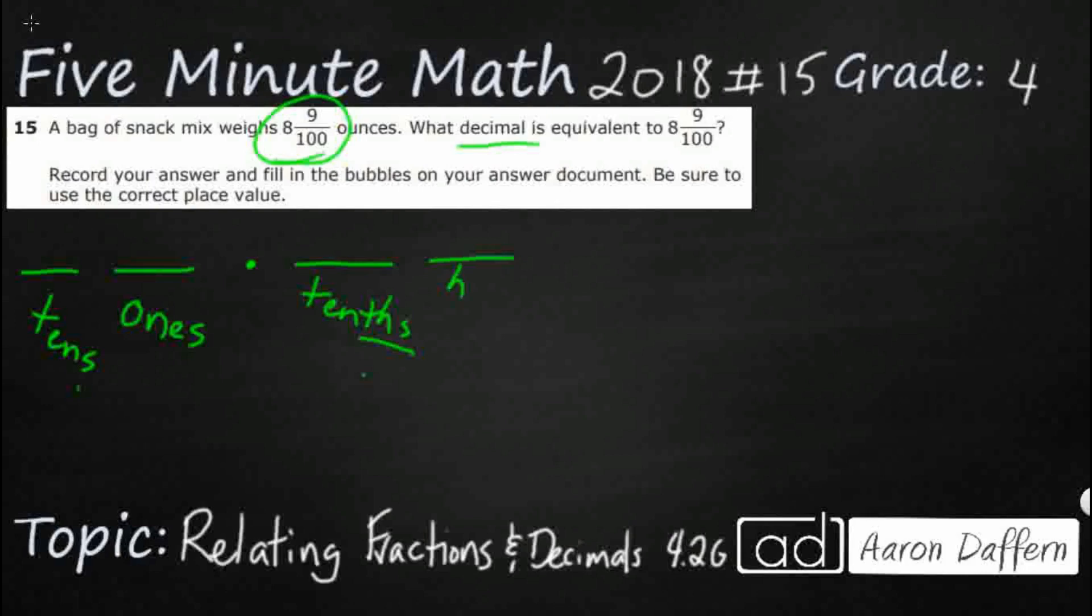And then next, we've got hundredths. And if we were to build to the left past tens, we would get hundreds. So there's kind of that mirror there. Beyond both of those is thousandths and thousands. So it kind of has that mirror property there, except for ones. There's no match for ones.